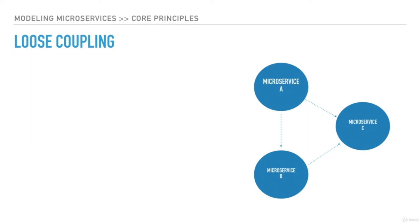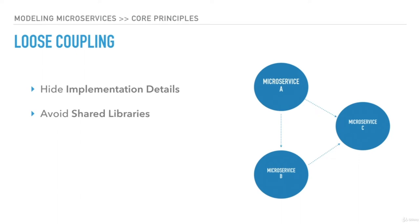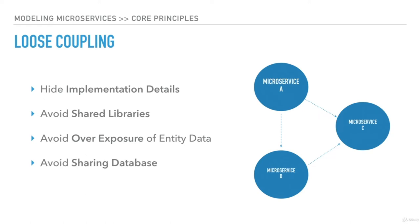The principle of loose coupling ensures that a change in one service does not impact other services. Not following single responsibility and high cohesion can lead to tight coupling, but there are many other factors too. We will discuss practices which help in ensuring loose coupling across services — these include hiding implementation details, avoiding shared libraries, avoiding overexposure, and avoiding sharing databases.